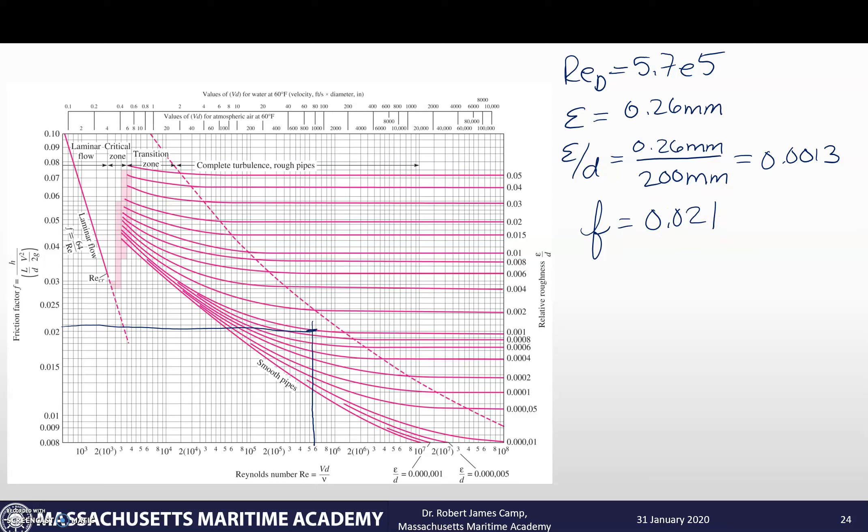So now I go and I solve the Darcy-Weisbach equation. So h of f is f, l over d, v squared over 2g. So it's 0.021. And then we need to multiply that by the length of our pipe. The length of our pipe is 100 meters. Our pipe diameter is 200 millimeters. At this point, we're going to convert that to meters so the units work out correctly. So v squared is 3.18 meters per second squared divided by twice gravity, two times, now it's metric, 9.81 meters per second squared. Meters cancel. Meters squared cancel. Second squared cancel. We're going to be left with units of meter, which is what I expect. So hf for this is we're going to lose 5.4 meters of friction through the system.